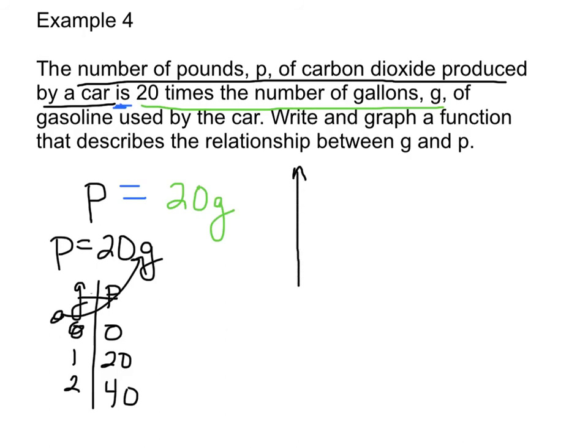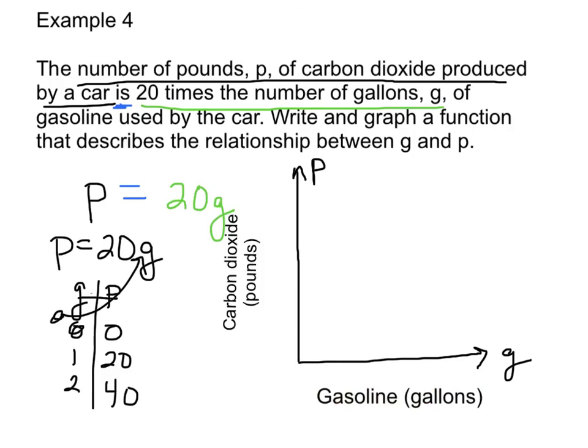We need to graph this. We only need the first quadrant, since we're talking about positive measurements. This is going to be your gallons, which is your X. This is going to be P, which is your Y. We have to label our horizontal axis is G, gallons of gasoline. Our vertical axis would be carbon dioxide, which is in pounds. You must label. Gallons of gasoline - we're counting by ones. Zero, one, two, three, and so on. Our P is going from zero, 20, to 40. So we're going by 20s. I'm going to count by 10s. You can count by 20s if you want.